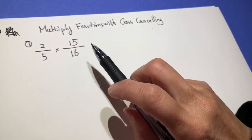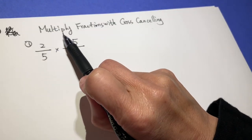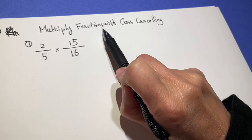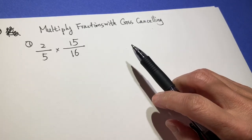Okay, dear class, this one we will do multiplying. We multiply fractions with cross-canceling.